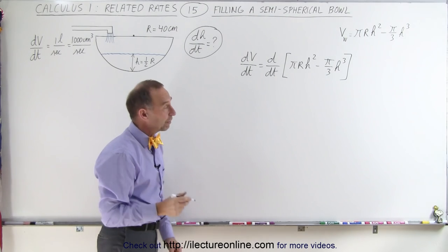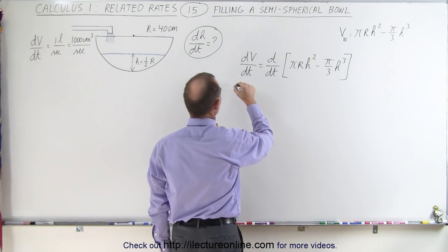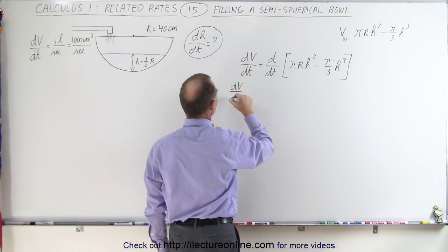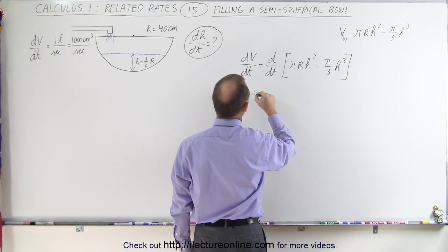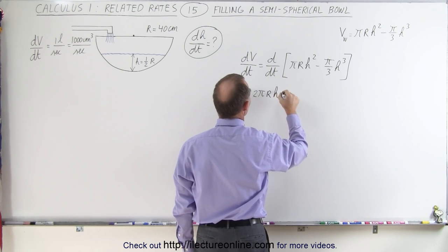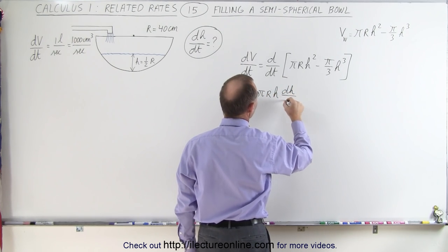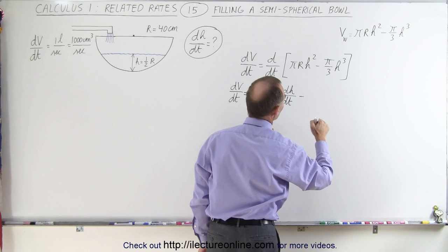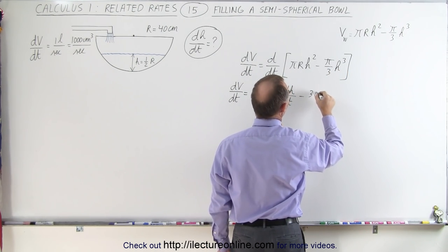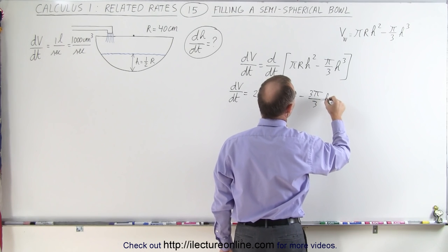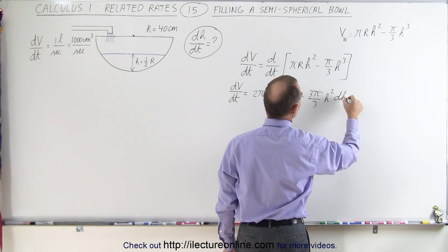We'll end up with dv dt is equal to, take the derivative here, we get 2 pi r h times dh dt minus, bring the 3 down, so we have 3 pi divided by 3 h squared times dh dt.